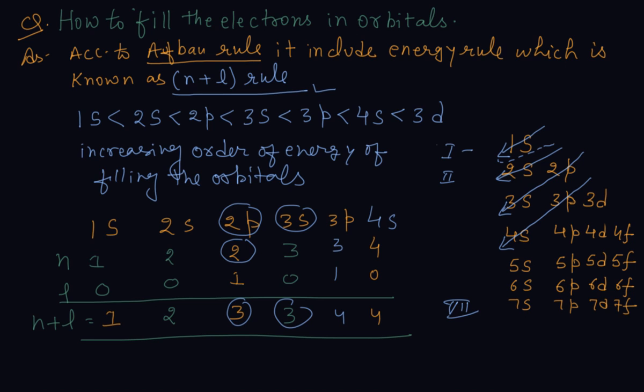That's why electrons go to 4s before 3d. I hope you understand this clearly now. The n+l rule is called the energy rule and is part of the Aufbau rule for filling electrons.